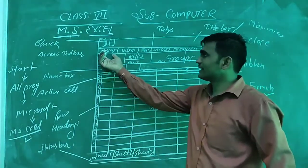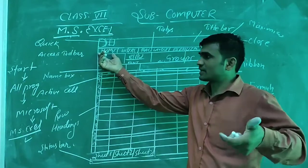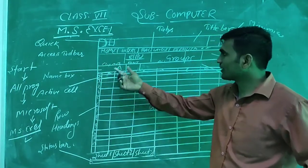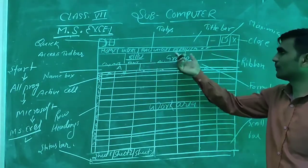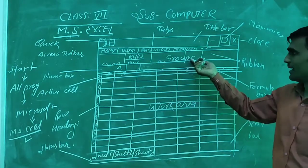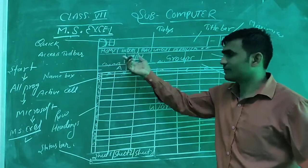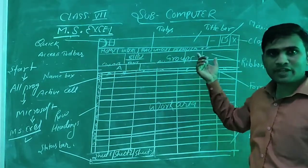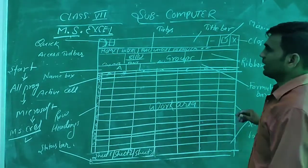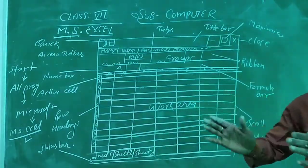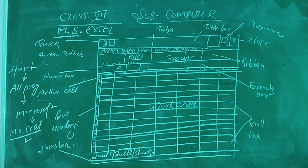When a tab is activated, in that tab there are groups such as the Clipboard group, Font group, Paragraph group, and Format group. In different tabs there are different types of groups, and in those groups all the options are available. By clicking on those options, we can apply formatting on the text.